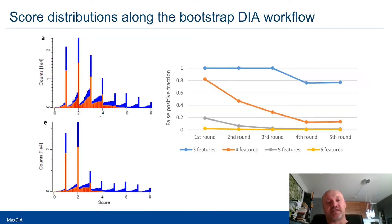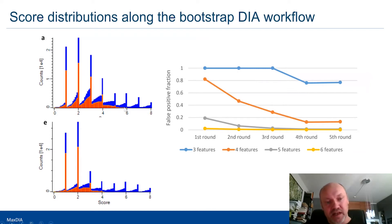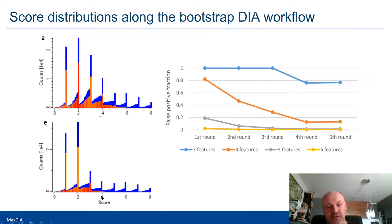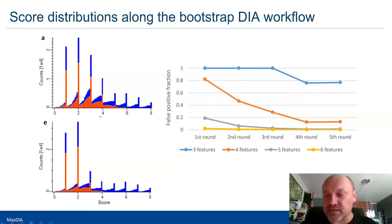Here you can see the impact of the different steps in the bootstrap workflow on the score distribution. With the first matching, scores reach up to over five or six. After applying all these constraints, we push the decoys down to below four. The red line showing matches that match exactly four features has 80 percent false positives after the first round, but after the last round of constraints the false positive rate has drastically reduced for these four-feature matches.